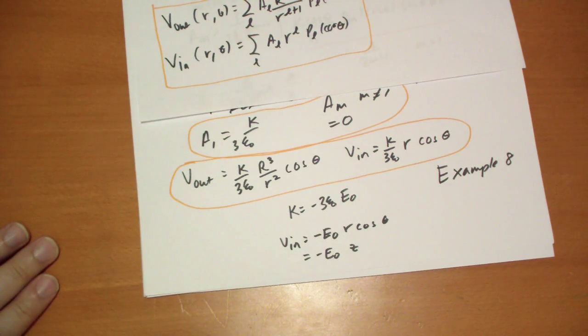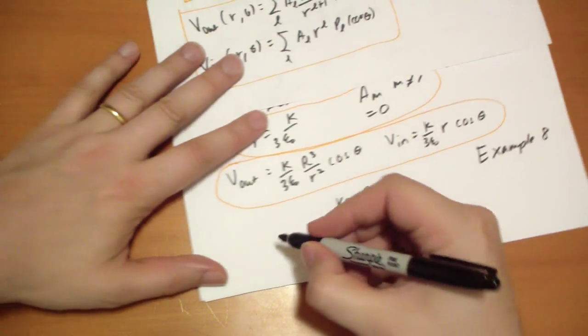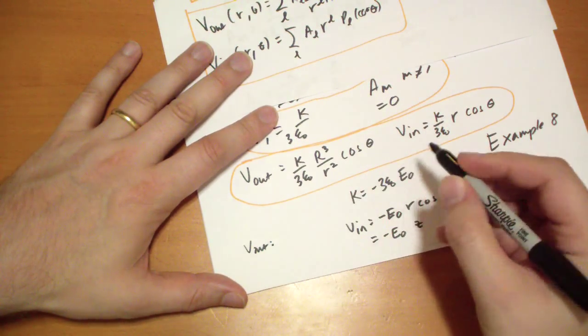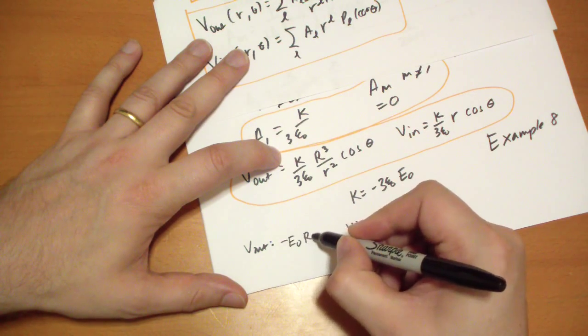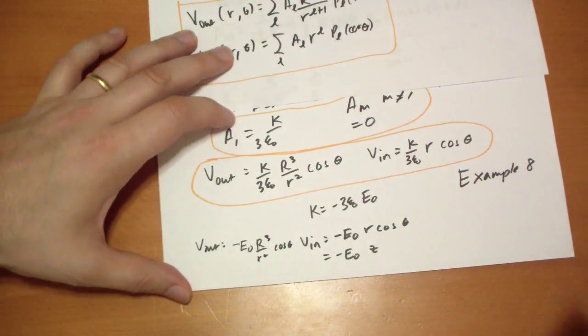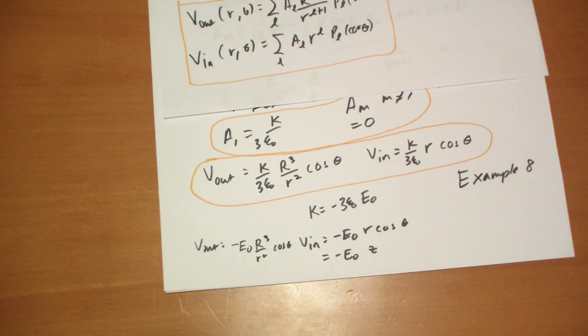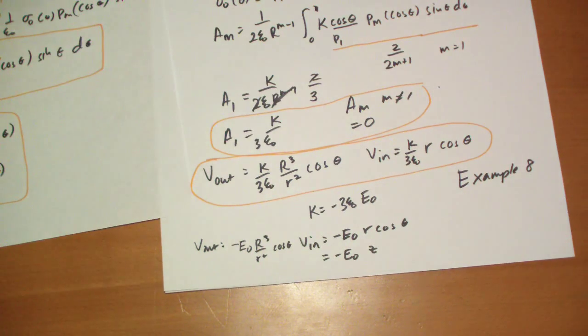And, of course, the external field will become, in this particular case, minus e-naught the radius cubed over r-squared cos-theta. Interesting result. Probably not completely surprising. If you want, you can play around with different sigma-naughts. You probably want to only have them have one or two of the Legendre terms to make your life a little easier.